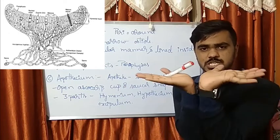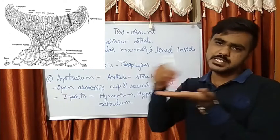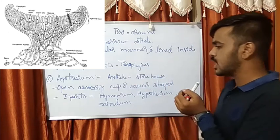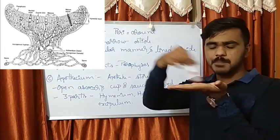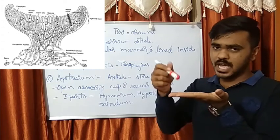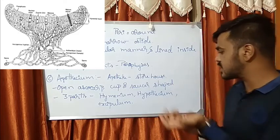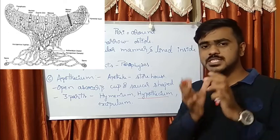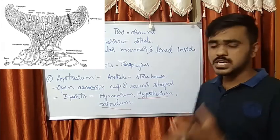The next ascocarp is the apothecium — 'apotheca' means a storehouse. It is open, cup- or saucer-shaped, with the upper surface bearing the asci and within them ascospores. The apothecium has three parts: the upper open surface consists of a hymenium above which asci are formed; just below the hymenium is the hypothecium; and below that is the fleshy part called the excipulum.